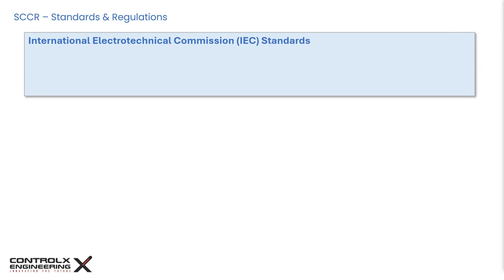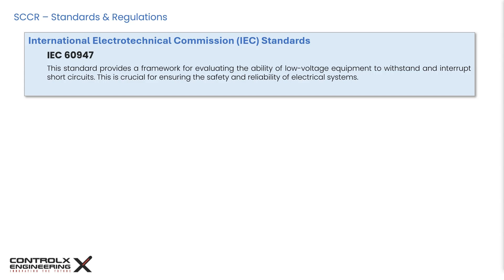The International Electro-Technical Commission, or IEC, is an international standards organization that publishes standards for all electrical, electronic, and related technologies. The IEC standard for industrial control panels provides a comprehensive framework for ensuring electrical safety. In particular, IEC 60947 is a comprehensive series of standards covering low voltage switchgear and control gear, addressing components like circuit breakers and contactors, as well as their short circuit current ratings to ensure devices can safely interrupt expected short circuit currents during fault conditions.